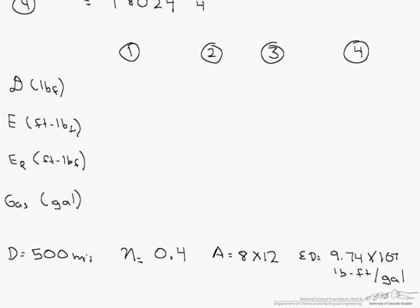When we use these numbers, we end up with, for the first one, a drag force of 849 pounds, an energy of 2.2 times 10 to the 9th. Our required energy is 5.6 times 10 to the 9th, and you're going to require then 57.6 gallons for our distance.